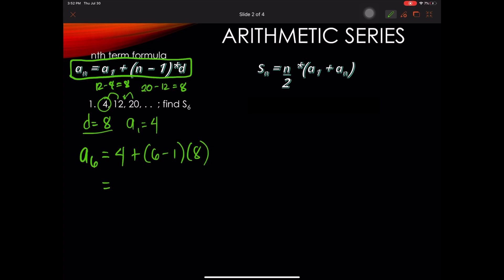So, if we simplify the right side, this will give us 4 plus 5 times 8. We apply the rule of PEMDAS. So 5 times 8 goes first, which is 40. Therefore, the 6th term of this sequence is 44.